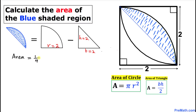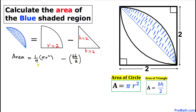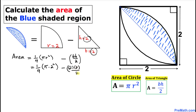So the area of this region equals the area of the quarter circle, which is one-fourth times πr², minus the area of the triangle, which is base times height divided by two. Filling in the values: one-fourth times π times 2 squared, minus 2 times 2 divided by 2.